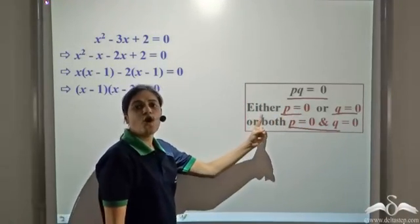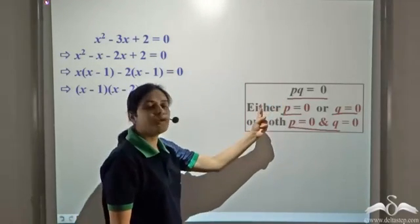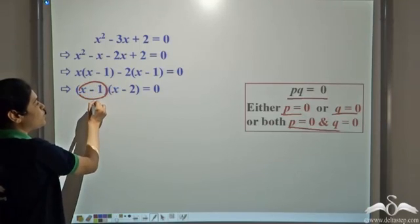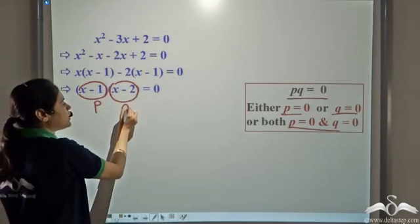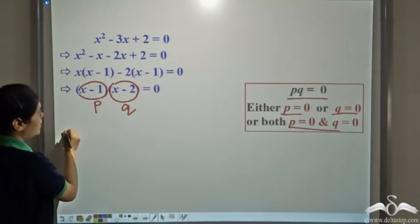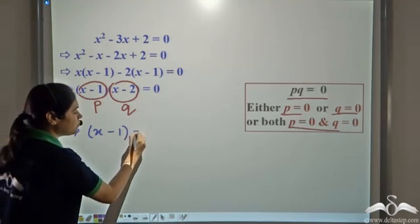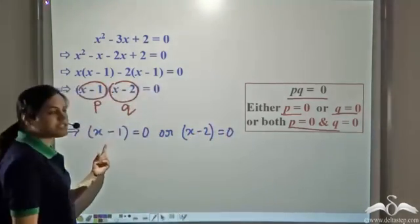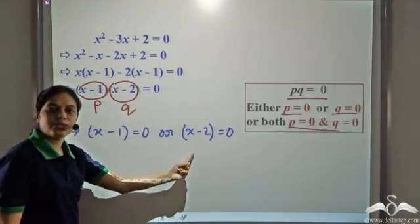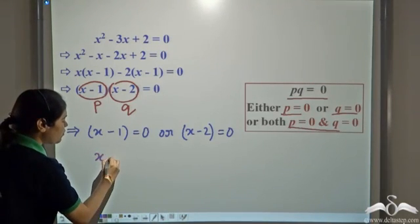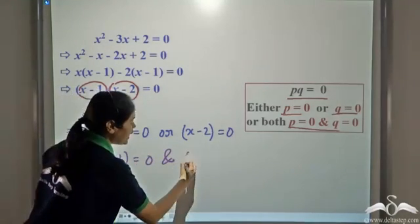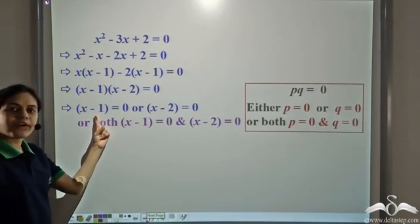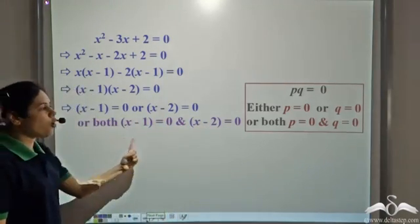We can use this rule in our equation. If we consider x minus 1 to be p and x minus 2 to be q, we can say that either x minus 1 is equal to zero, or x minus 2 is equal to zero, because their product is zero. So one of them has to be zero, or both could be zero — that is, both x minus 1 and x minus 2 equal zero.